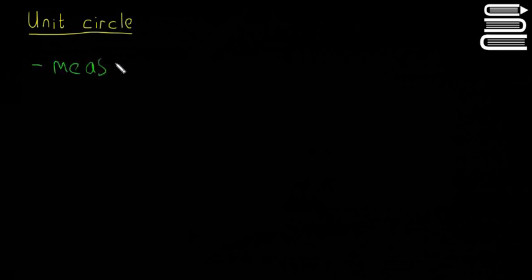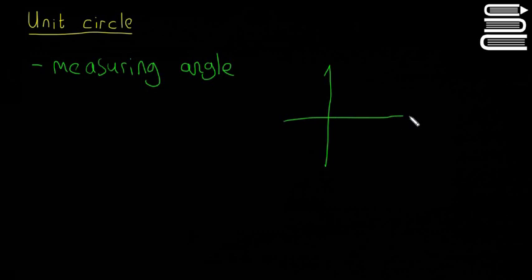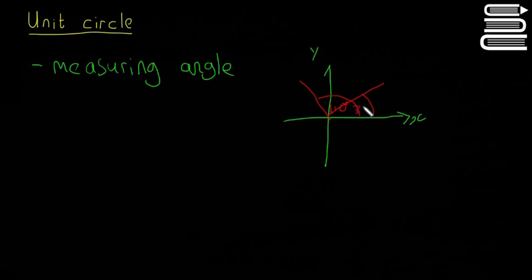The first thing we're going to talk about is measuring an angle. The rule is you always have to measure an angle from the positive x-axis. So here we have our x and y. If you have this angle here, you basically measure it from here to wherever the line is. So this angle here is going to be about 110 degrees. This angle here is always 30 degrees.